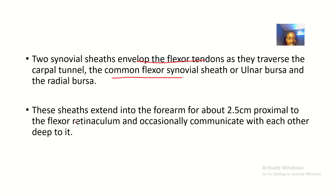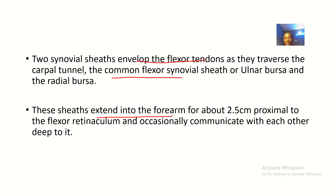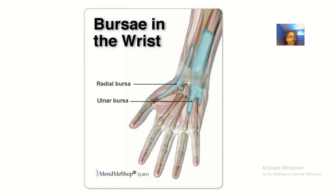These two sheets extend into the forearm for about 2.5 centimeters proximal to the flexor retinaculum — that is, 2.5 centimeters above the flexor retinaculum — and they occasionally communicate with each other deeply.